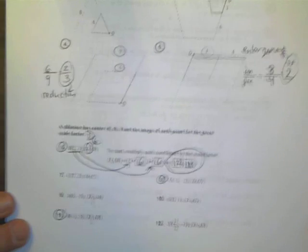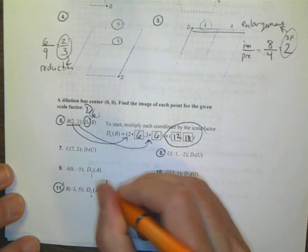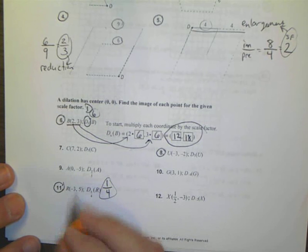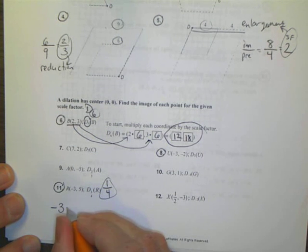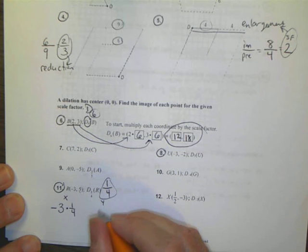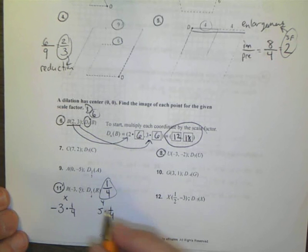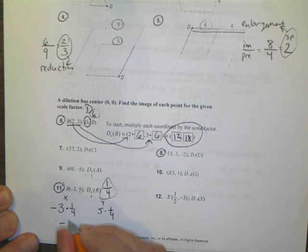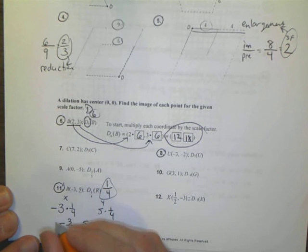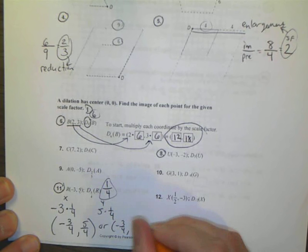Looking down at number 11, I want to do the same kind of idea. My scale factor is 1/4. Which means I'm going to take this point, break it apart, and do negative 3 times the scale factor for my x value. For my y value, I'm going to do 5 times my scale factor. By multiplying this out, I'll end up with my new image point from the dilation. Negative 3 times 1/4 becomes negative 3/4, that's my x value. And 5 times 1/4 is 5/4, or 1 and 1/4. So that is my new point.